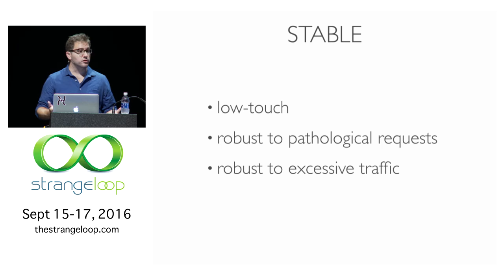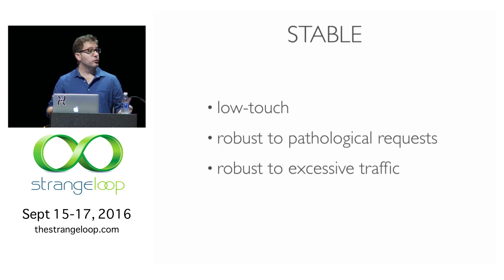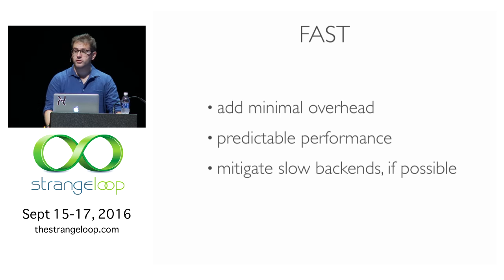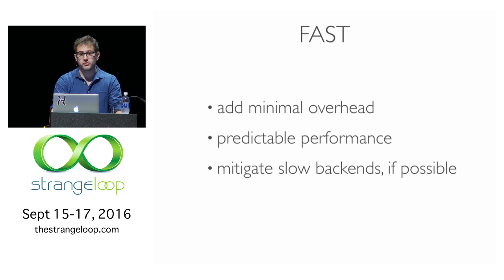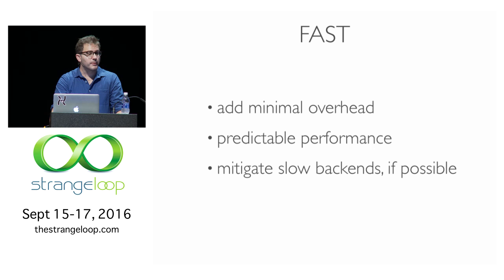We want it to be robust to pathological requests — to reject malformed requests, to reject malicious requests like a slow loris attack where someone sends one byte every minute. We want it to be robust to lots of well-formed traffic, able to shed load if the backend can't deal with the volume and still stay up itself. We want it to be fast, adding as little overhead as possible, and predictably so. Something fast 99% of the time but slow the other 1% is far worse than being slightly slower on average. Where possible, we want it to detect issues on the backend and route around them, actually making the system faster as a whole.